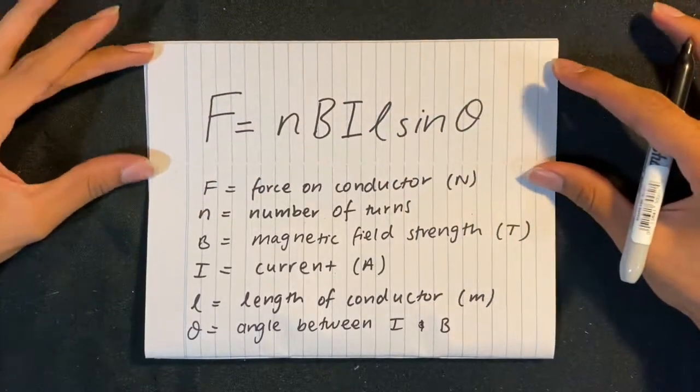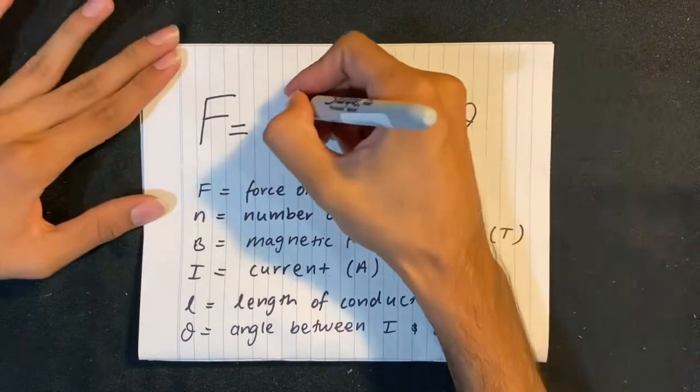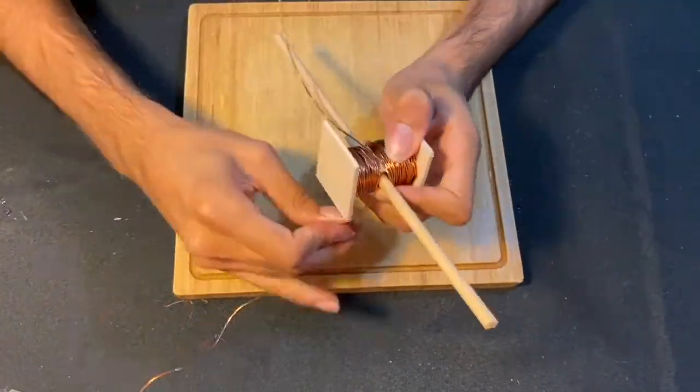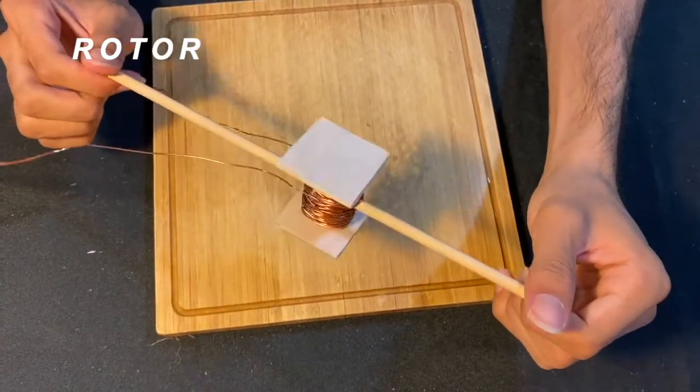The motor effect formula shows us that to increase the force on the coil, we can wrap our wire around the armature multiple times. The armature and the axle together form our rotor, as they will be rotating in our magnetic field.